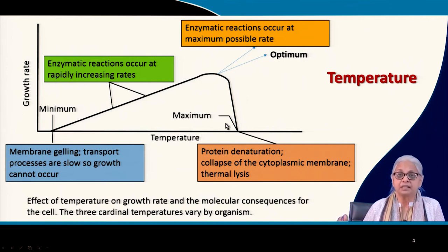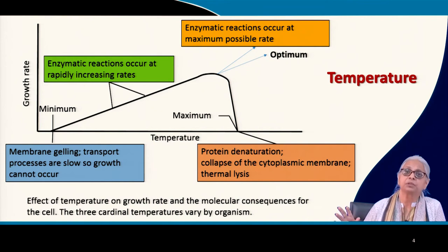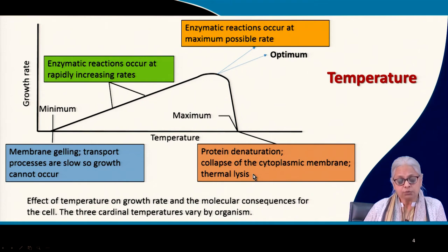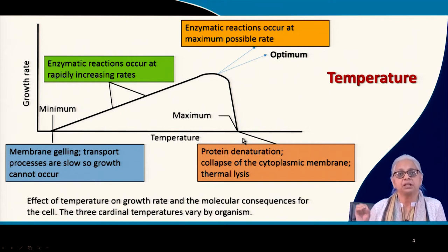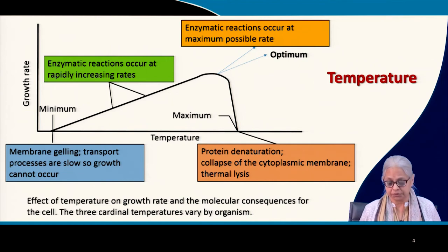The cells, enzymes, and cell wall are being damaged. At that point there will be a maximum beyond which cells will be destroyed — that is thermal lysis. These are the three cardinal temperatures: minimum, optimum, and maximum. These three cardinal points exist for practically every environmental factor that determines growth conditions for any given organism.